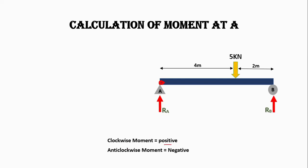We consider clockwise moment as positive and anti-clockwise moment as negative. Taking moment from point A — at A the moment will be zero. This 5 kilonewton load will bend the beam in the clockwise direction and the support will resist this moment in the anti-clockwise direction. So we consider the clockwise moment as positive and the anti-clockwise one as negative.